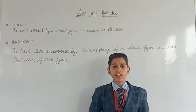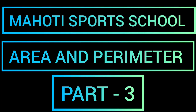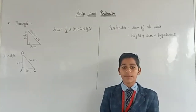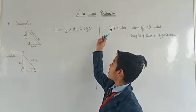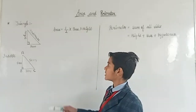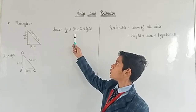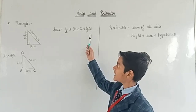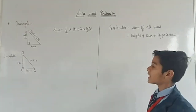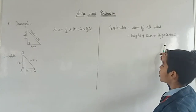So now we will learn about the formulas of area and perimeter. We will start with the area and perimeter of a triangle. We have a right-angle triangle. The area of a right-angle triangle is 1/2 × base × height. The perimeter of a right-angle triangle is the sum of all sides: height plus base plus hypotenuse.